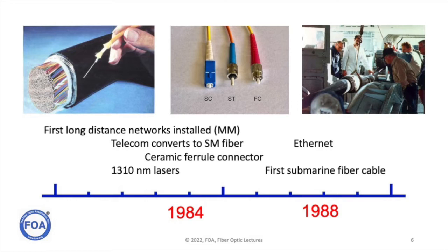Fiber optics also started being used for local area networks. Ethernet standards for fiber were developed, and we worked on a committee that developed Fiber Distributed Data Interface — FDDI — the first 100 megabit per second fiber optic network, strictly fiber. There were also interesting military developments, like a fiber optic guided missile called FOGM, literally a missile with a spool of fiber that would string out behind it so a soldier with a joystick could control it remotely via video sent back over the fiber. Crazy idea — never really went anywhere, but a fascinating use of fiber.